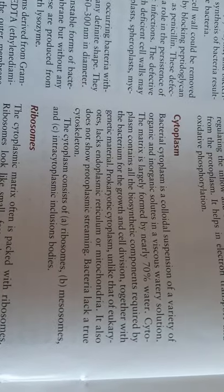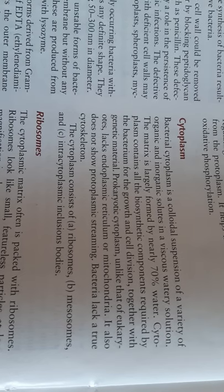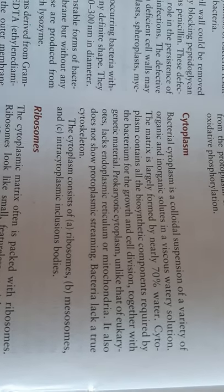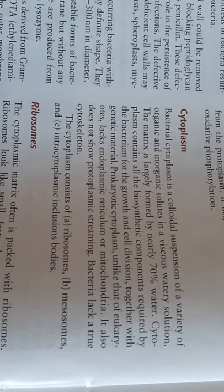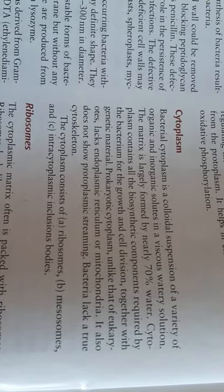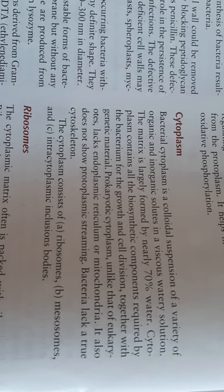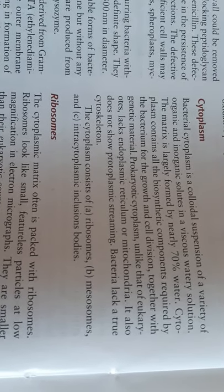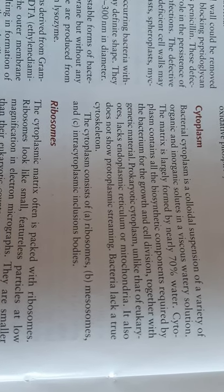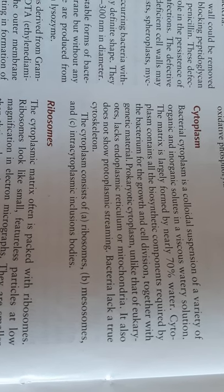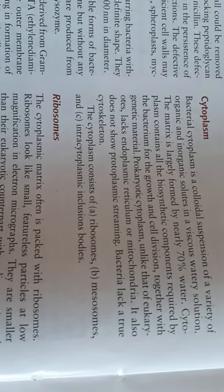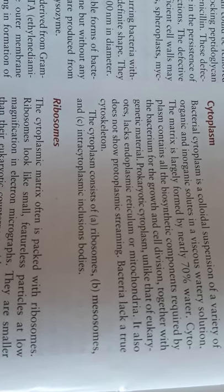Bacterial cytoplasm is a colloidal suspension of a variety of organic and inorganic solutes in a viscous watery solution. The matrix is largely formed by nearly 70% water. Cytoplasm contains all the biosynthetic components required by the bacterium for growth and cell division, along with genetic material. Prokaryotic cytoplasm, unlike that of eukaryotes, lacks endoplasmic reticulum and mitochondria, and does not show protoplasmic streaming. Bacteria lack a true cytoskeleton. The cytoplasm consists of ribosomes, mesosomes, and intracytoplasmic inclusion bodies.